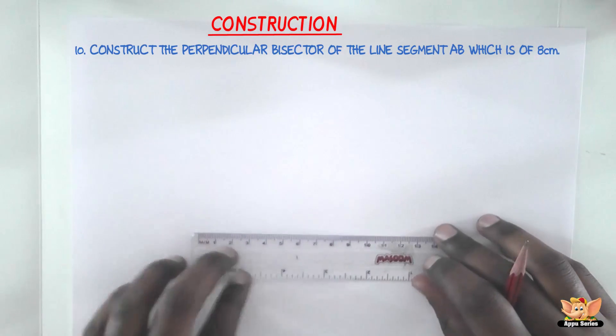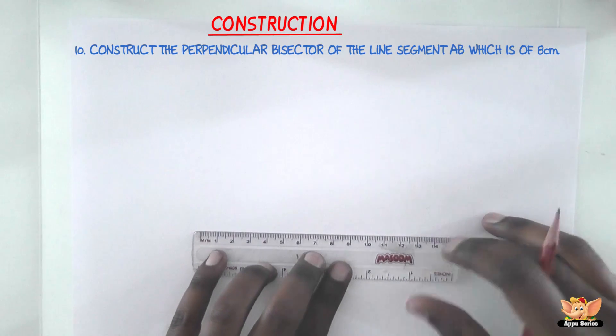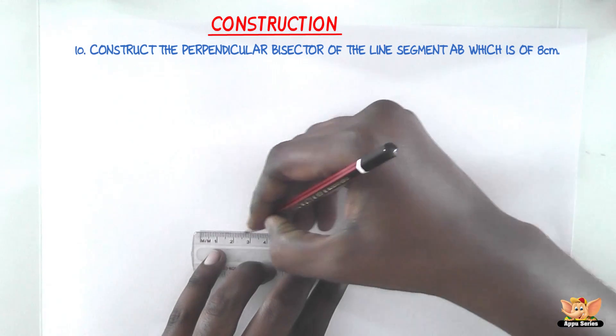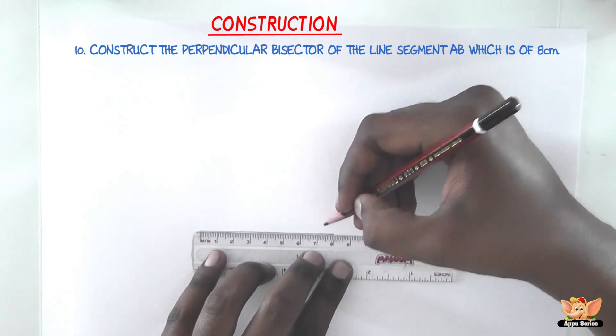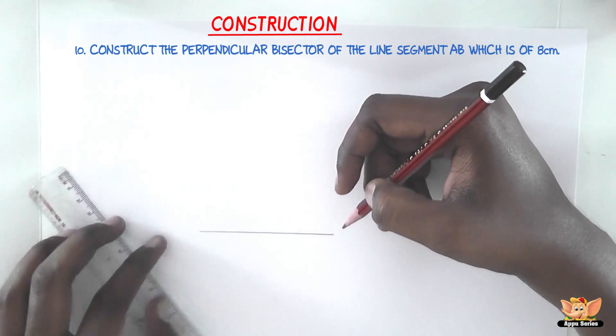So the first step is to construct a line segment which is 8 cm in length. Here it is 8 cm in length, we have AB.